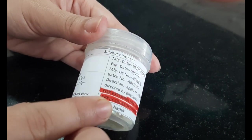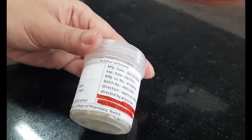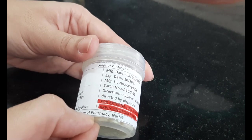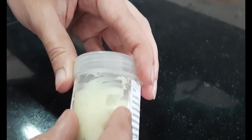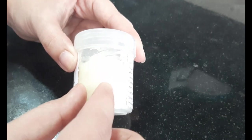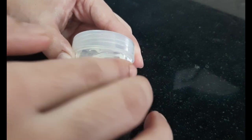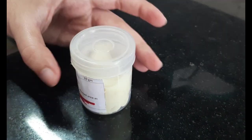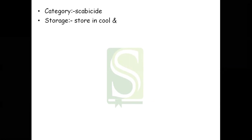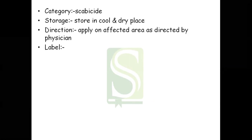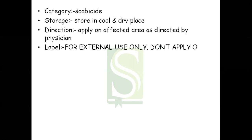We have highlighted the label in red color and will now stick it on the container. When applying the label, keep in mind that a small amount of space should be left at the bottom and top, and there should be enough space for the formulation to be visible externally — the label should not cover the whole area. The category of this product is scabicide. Storage condition: store in a cool and dry place. Direction: apply on affected areas as directed by the physician. The labeling condition: for external use only — do not apply on broken skin.